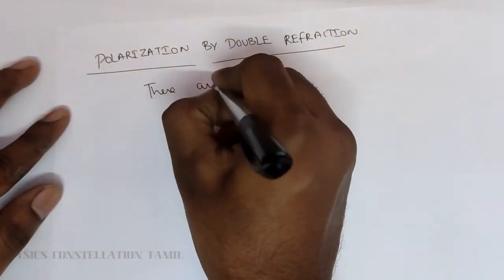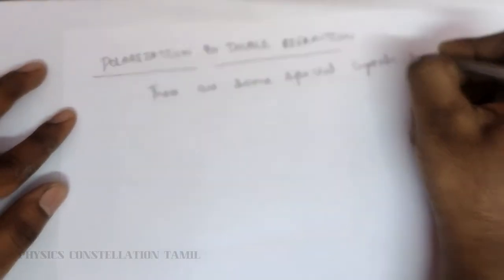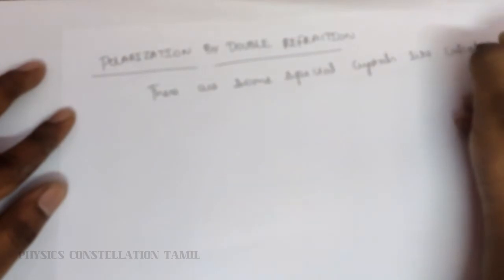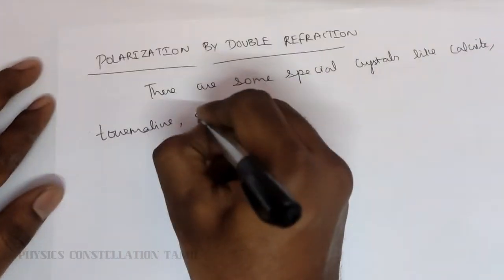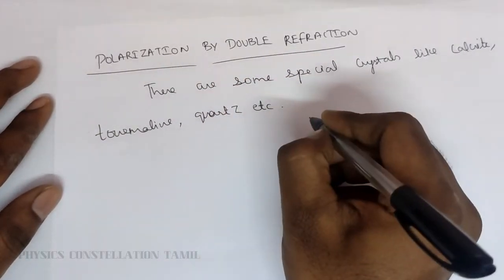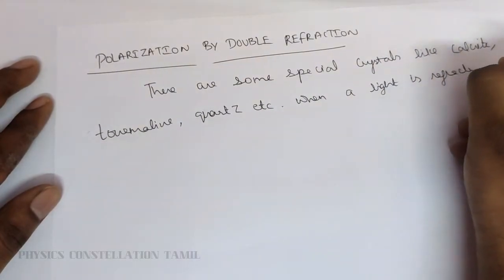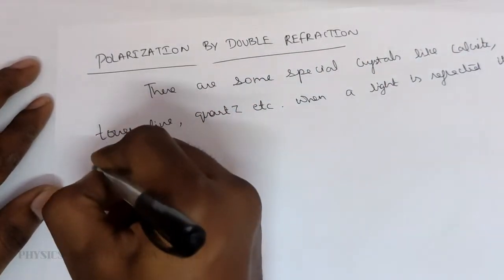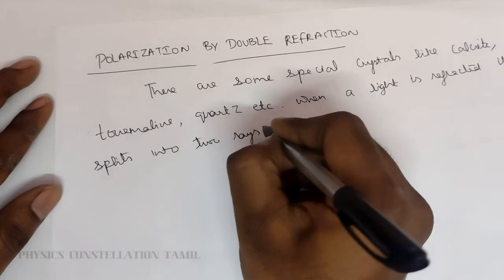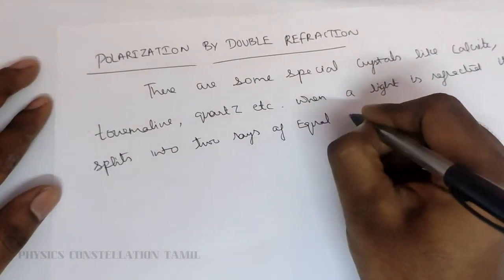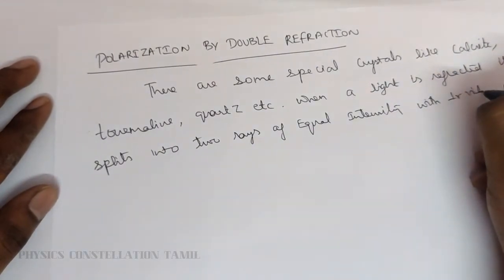There are some special crystals like calcite, tourmaline, quartz, etc. When light is refracted, it splits into two rays of equal intensity with perpendicular vibration.